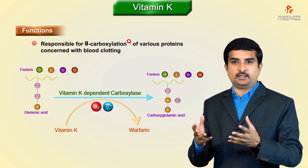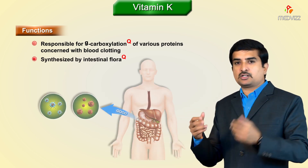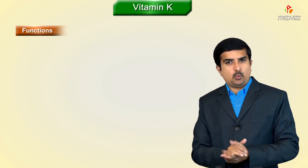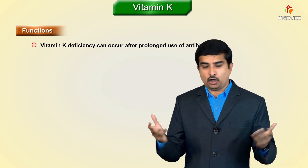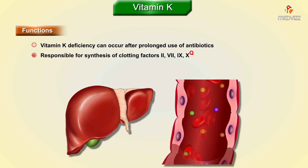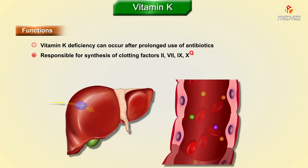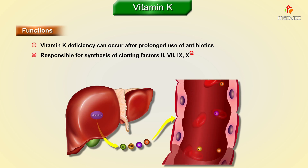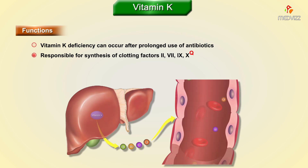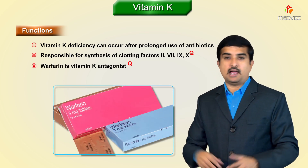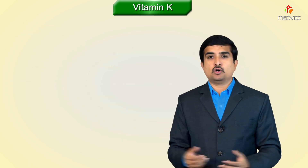Vitamin K is synthesized by the intestinal flora, so vitamin K deficiency can occur after prolonged use of antibiotics. It is responsible for the synthesis of clotting factors 2, 7, 9, and 10, because gamma carboxylation of glutamic acid requires post-translational modification of these clotting factors, which is dependent on vitamin K as a cofactor. Warfarin is a vitamin K antagonist.